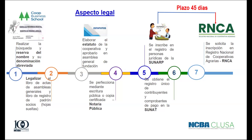En forma gráfica, los siete puntos para constituir una cooperativa son: primero, realizar la búsqueda del nombre; segundo, legalizar los libros —de preferencia el libro de asambleas y el libro de registro padrón de socios—; tercero, elaborar el estatuto, que tiene que estar consignado en el libro de actas. Este documento del estatuto se perfecciona ya sea por escritura pública o por copia certificada. Se aconseja la copia certificada porque los costos son más adecuados y si hubiera alguna observación es más fácil subsanar. Ese documento se inscribe en el registro de personas jurídicas. Una vez obtenida la inscripción, se saca el RUF —punto seis— y luego se inscribe en el registro de cooperativas agrarias.